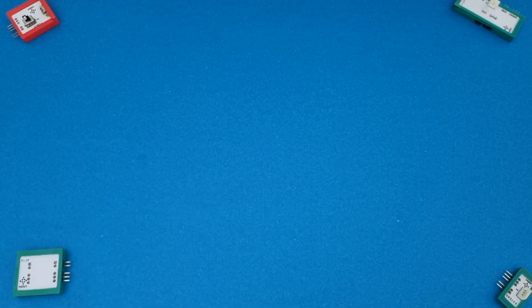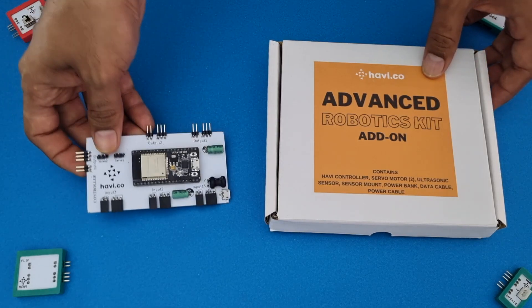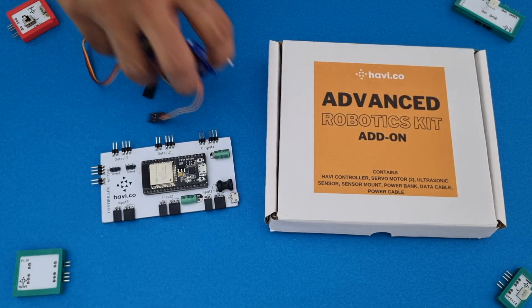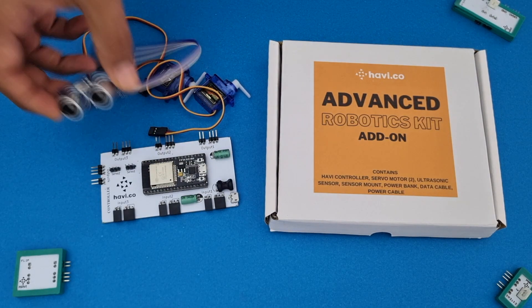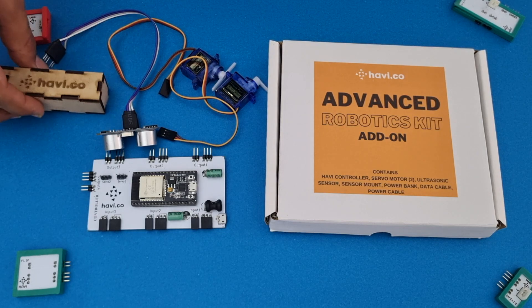It comes with Havi Controller, two servo motors, one ultrasonic sensor with mount, a power bank and a data cable.